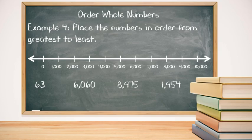The 63 doesn't have a thousands place, so it would go first, followed by the 1,954 since it only has 1,000. Then the 6,060 since it has six thousands. And last, the 8,975 with its eight thousands. Now we can reorder our list.